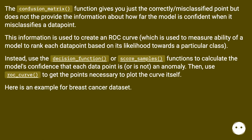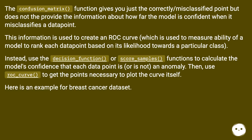The confusion_matrix function gives you just the correctly or misclassified point, but does not provide information about how far the model is confident when it misclassifies a data point. This information is used to create a ROC curve, which measures the ability of a model to rank each data point based on its likelihood towards a particular class. Instead, use the decision_function or score_samples functions to calculate the model's confidence that each data point is, or is not, an anomaly. Then, use roc_curve to get the points necessary to plot the curve itself.